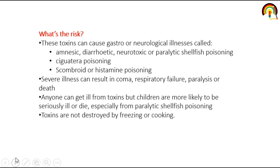What is the risk of these seafood toxins? These toxins can cause gastrointestinal or neurological illness — mainly stomach-related problems and neuronal problems, like amnesic, diarrhetic, neurotoxic, paralytic, ciguatera, and histamine poisoning. Several illnesses can result in respiratory failure, paralysis, or even death. Anyone can get ill from these toxins, but children are more likely to be seriously ill or die, especially from paralytic poisoning. Toxins are not destroyed by freezing or cooking.